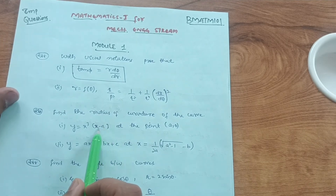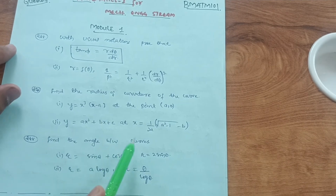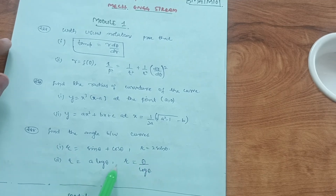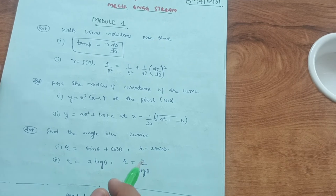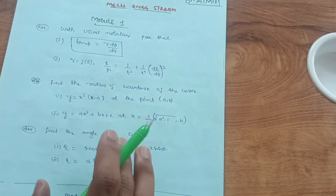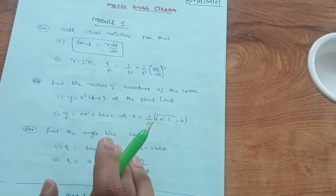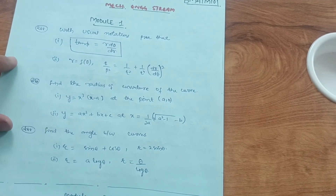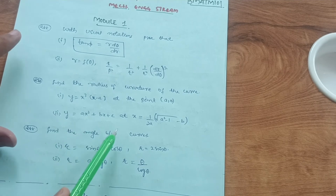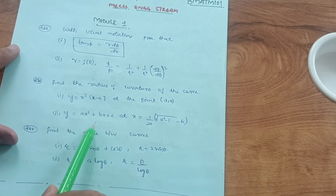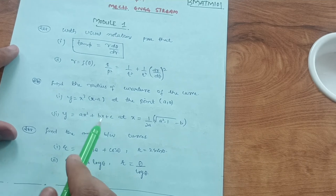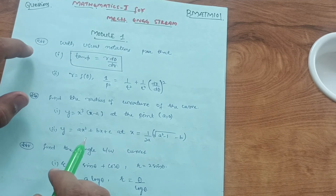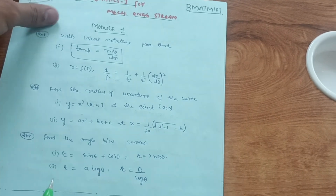Also try three to four problems on finding the angle between curves, for example r = sinθ + cosθ and r = 2sinθ, or r = a·log(θ) and r = θ/log(θ). No need to give much concentration to the pedal equation — just focus on the first part of the module. Covering these topics will easily get you 20 marks from this module, which is a passing module.